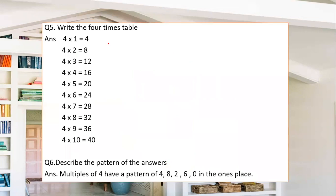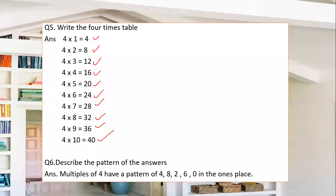Next we have: write the 4 times table. I have written it for you because right after this question we have to tell the pattern of these answers. So: 4 one times is 4, two times is 8, three times is 12, four times is 16, five times is 20, six times is 24, seven times is 28, eight times is 32, nine times is 36, and ten times is 40.